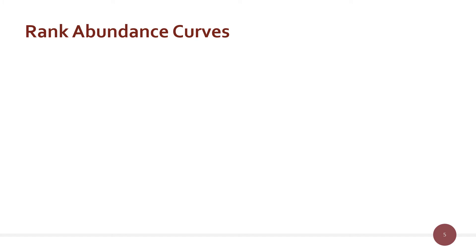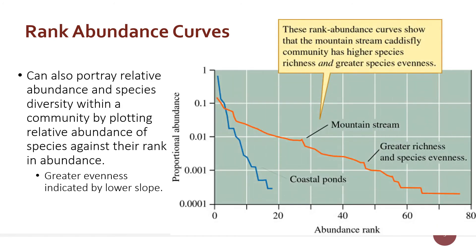The Shannon-Wiener Diversity Index is really useful, but it boils a lot of information down into one number. So we also use relative abundance displayed in a graph called a rank abundance curve, which conveys a lot of information at a glance. To make a rank abundance curve, we take our list of species and put them in order from most dominant — rank number one, with the largest number of individuals — to the species with the fewest individuals. That rank order is on the x-axis, and proportional abundance — the p-sub-i from the previous equation — is on the y-axis.